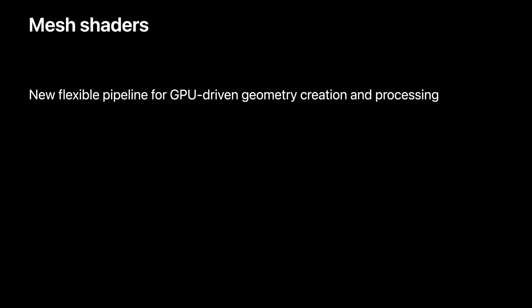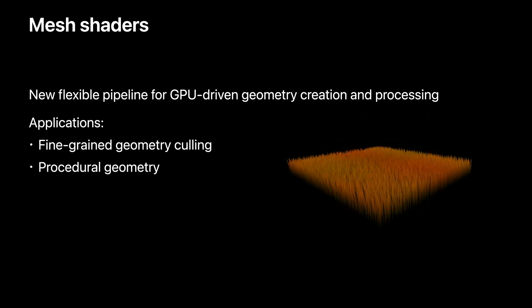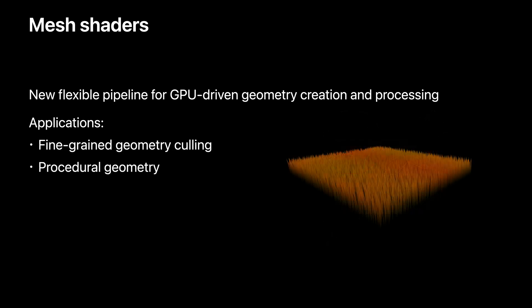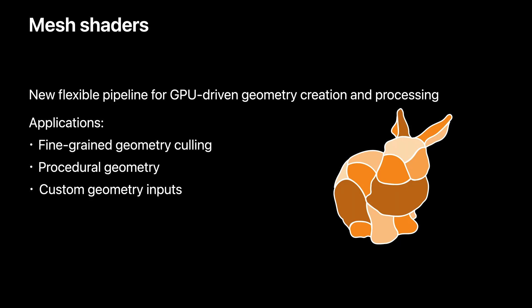Mesh Shaders is the new flexible pipeline in Metal for GPU-driven geometry creation and processing. It improves on the vertex fragment pipeline, adding a lot of flexibility and removing the limitations of per-vertex processing. It has multiple implications, including fine-grained geometry culling, scalable procedural geometry creation on the GPU, and allowing custom geometry inputs such as compressed vertex streams, meshlets, and complex procedural algorithms.